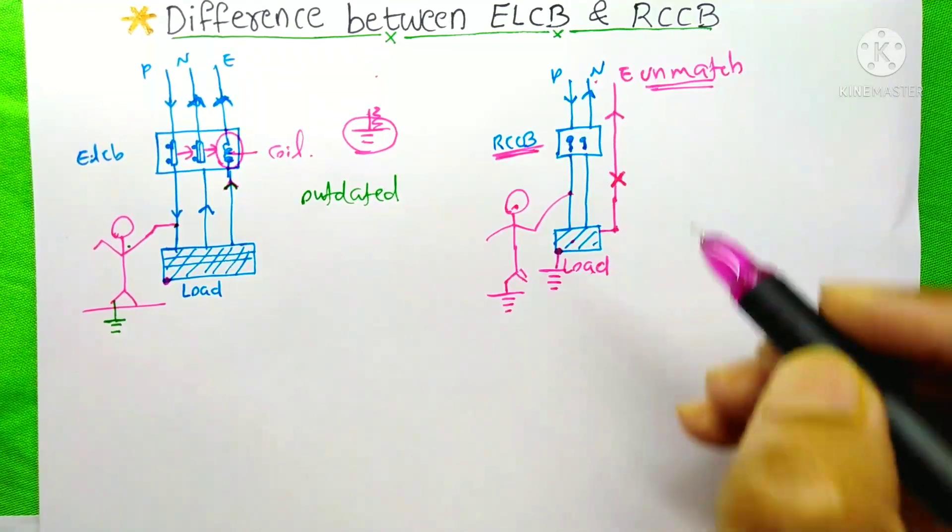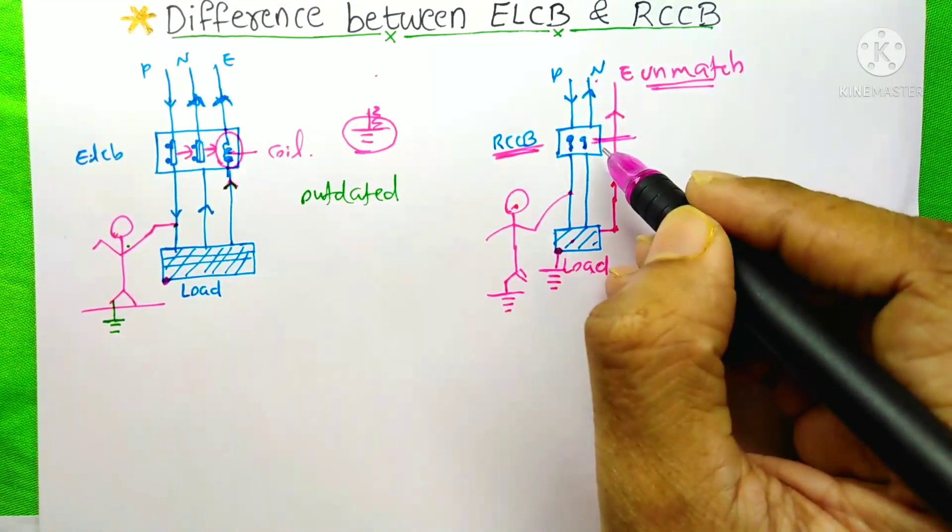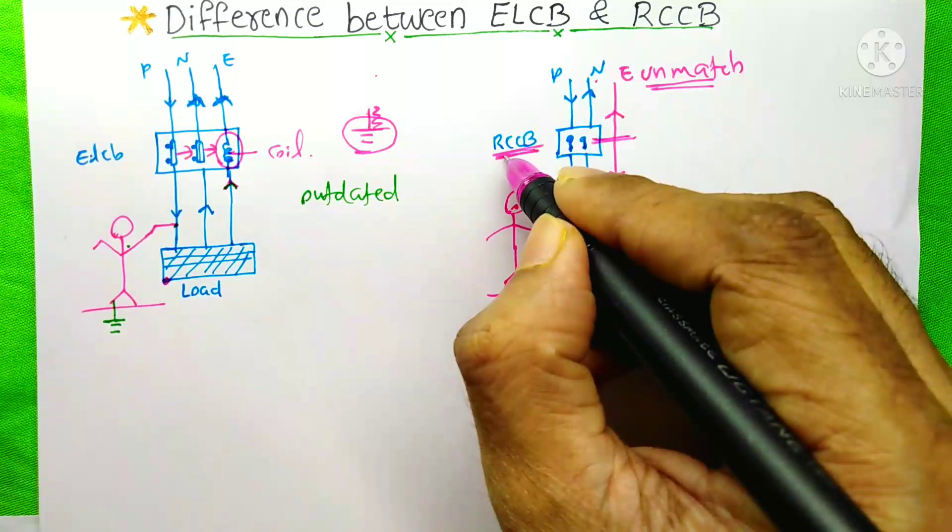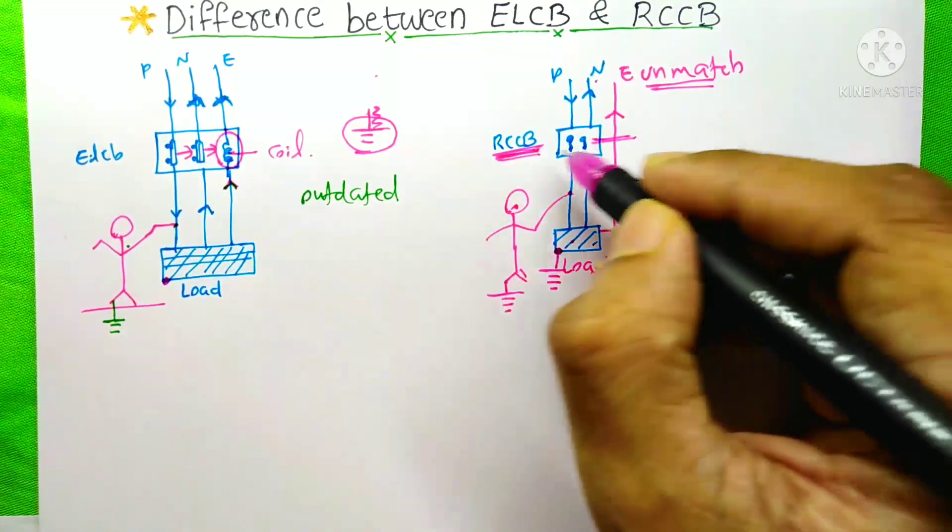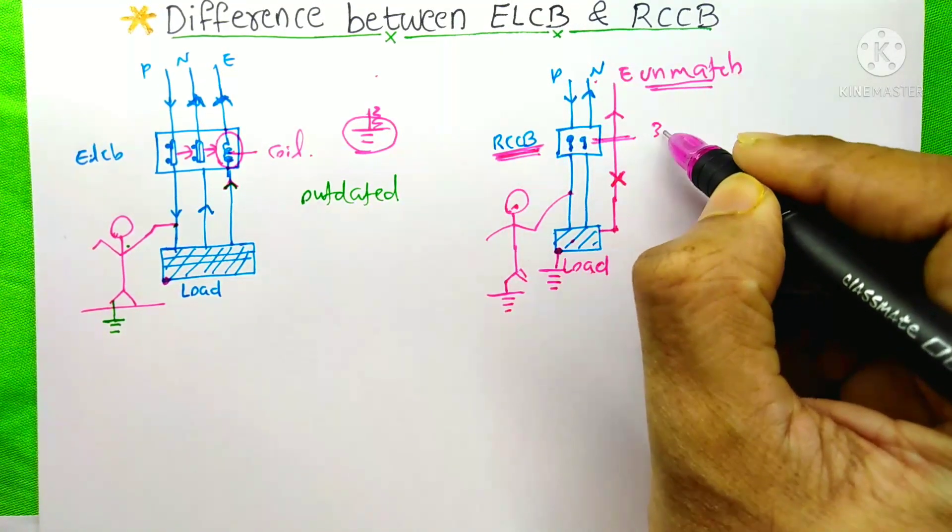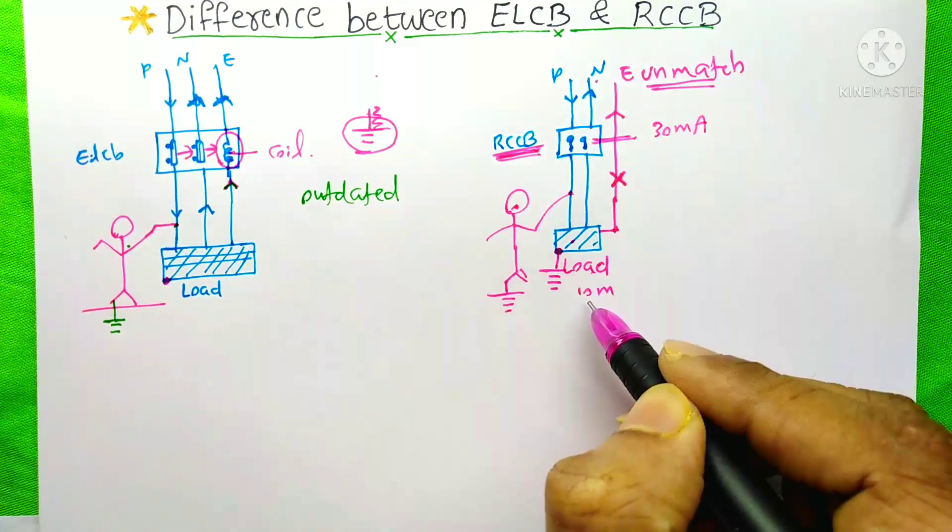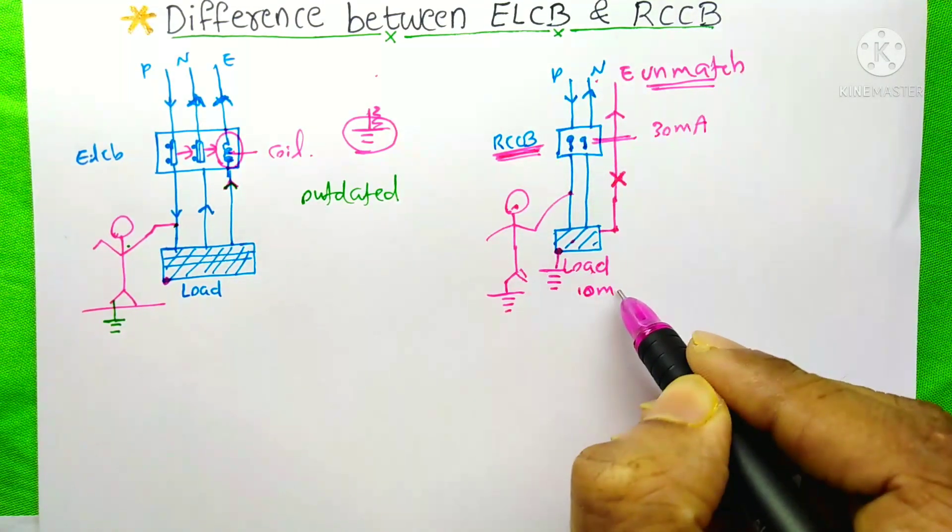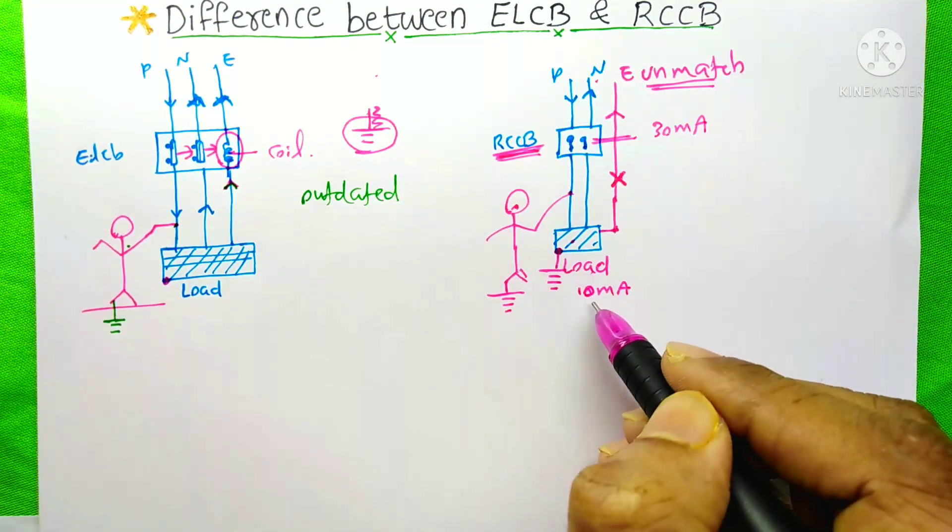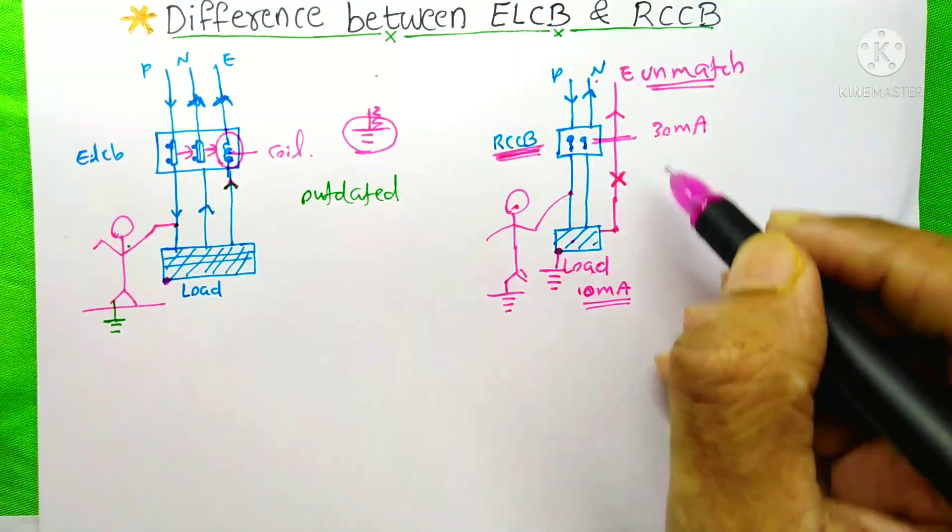And you know, for the tripping of this RCCB, the leakage current must be equal to the rating of this RCCB. Suppose the rating of this RCCB is 30 mA and only the leakage current here is 10 mA, then it is very low compared to this rating.